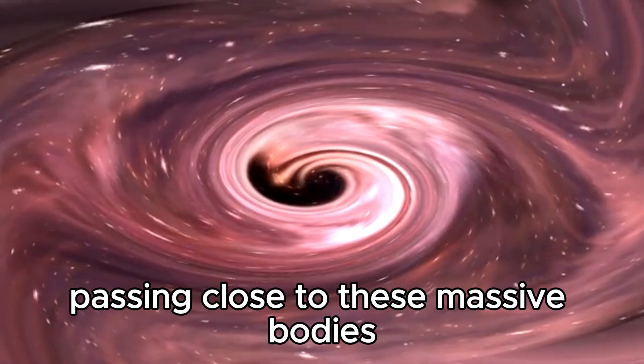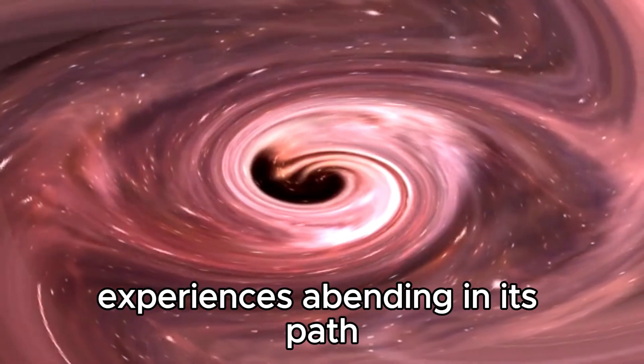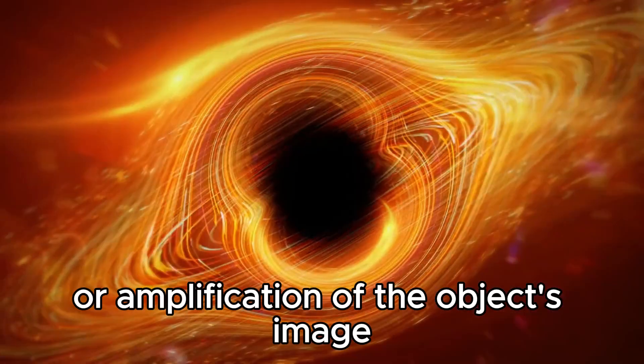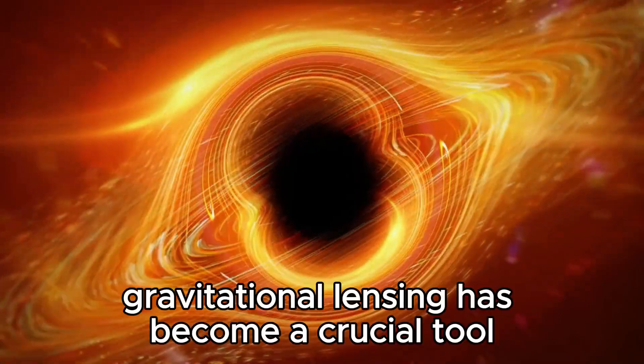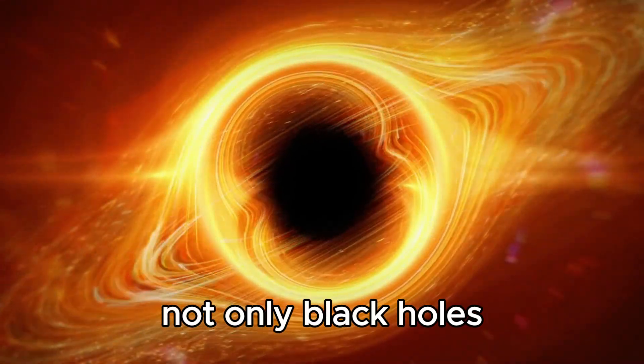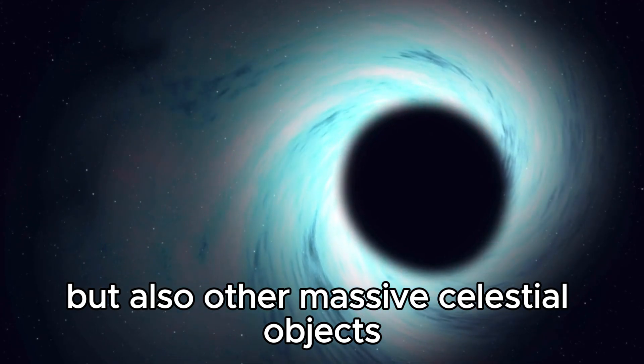When massive objects like black holes distort the fabric of spacetime around them, light from distant objects passing close to these massive bodies experiences a bending in its path. This results in a visual bending or amplification of the object's image. Gravitational lensing has become a crucial tool for astronomers in studying not only black holes, but also other massive celestial objects.